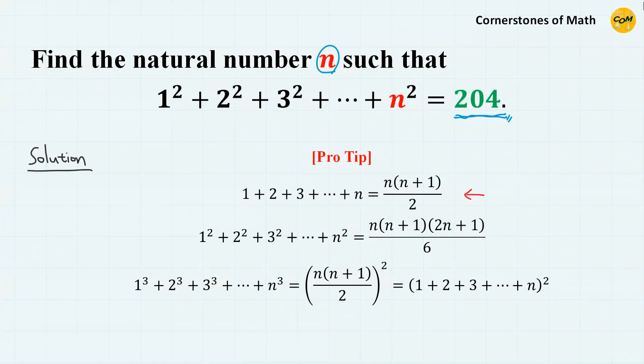So this is the formula for the sum of natural numbers from 1 to n. This is the formula for the sum of squares of natural numbers. And this is the formula for the sum of cubes, which is surprisingly equal to the square of the sum of natural numbers from 1 to n. Some of you might want to know the derivation of these formulas, but that's the topic for another video. And here, I will just simply use the formula, especially this formula.